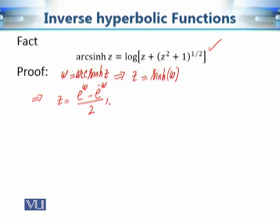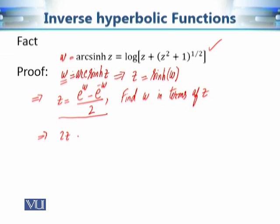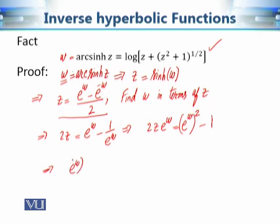From the definition of the hyperbolic sine function, z equals (e to the power w minus e to the power minus w) divided by 2. Our aim is to find w in terms of z. Simplifying, this becomes e to the power w minus 1 over e to the power w, which implies 2z times e to the power w equals e to the power 2w minus 1. Rearranging: e to the power 2w minus 2z times e to the power w minus 1 equals 0.